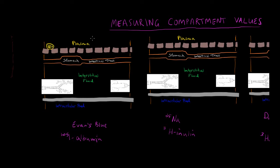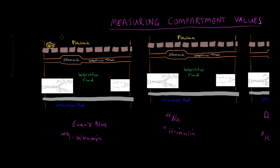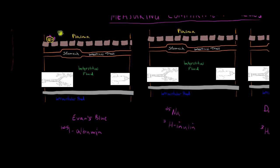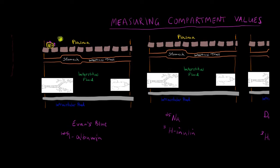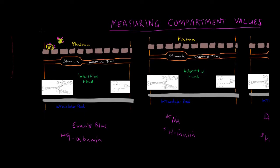Plasma has a high concentration of proteins and the interstitial fluid has a low concentration of proteins. If we inject a dye into the blood vessel and it attaches to the albumin, we can calculate plasma volume using the principle of mass balance — measuring the concentration of the dye, knowing the volume and concentration of injected material, and then measuring the concentration of the dye in the plasma.